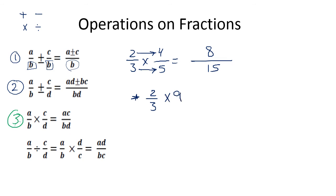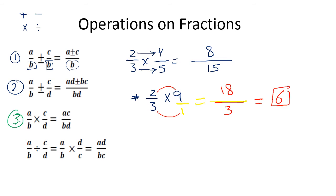Notice that if it's two over three multiplied by nine and you don't have a denominator, you can add a denominator of one. So it's three multiplied by one in the denominator and two multiplied by nine in the numerator, giving 18 over three, which equals six. In case you have a whole number, you can always add a denominator of one.